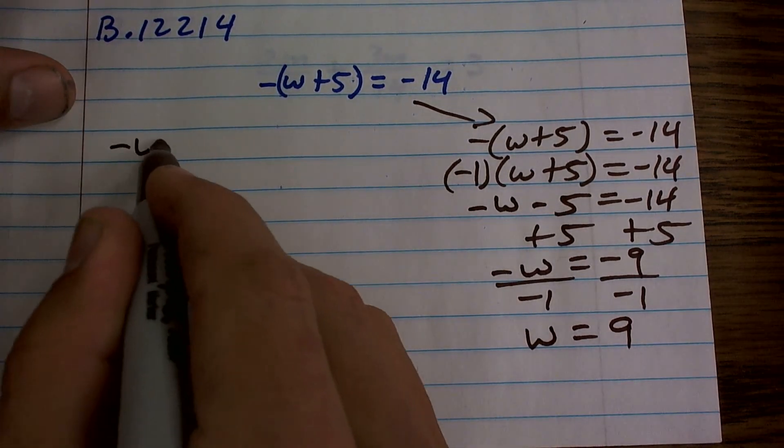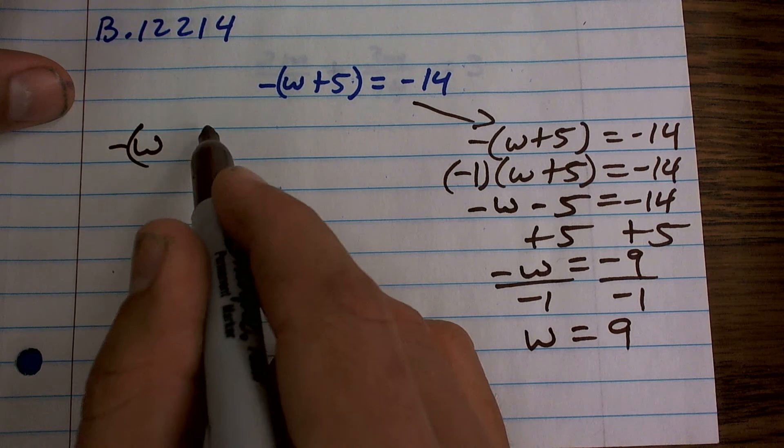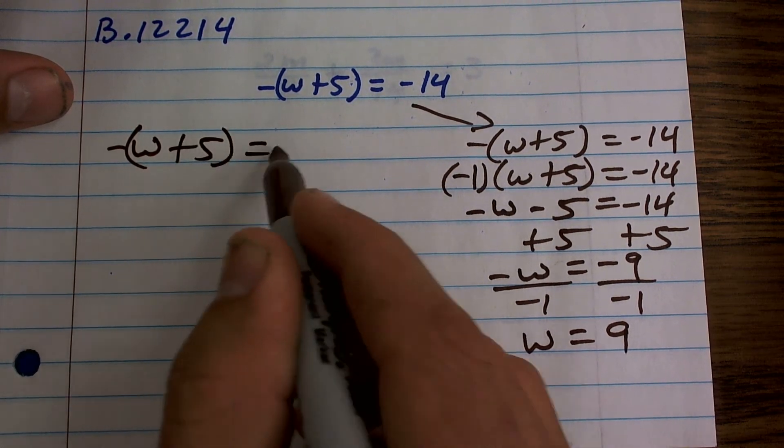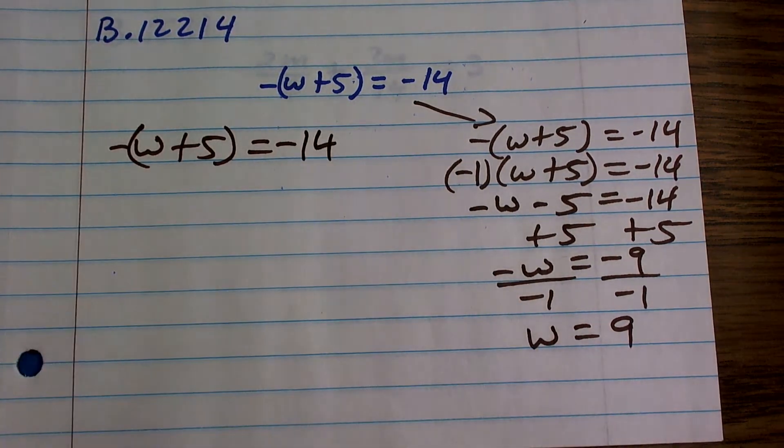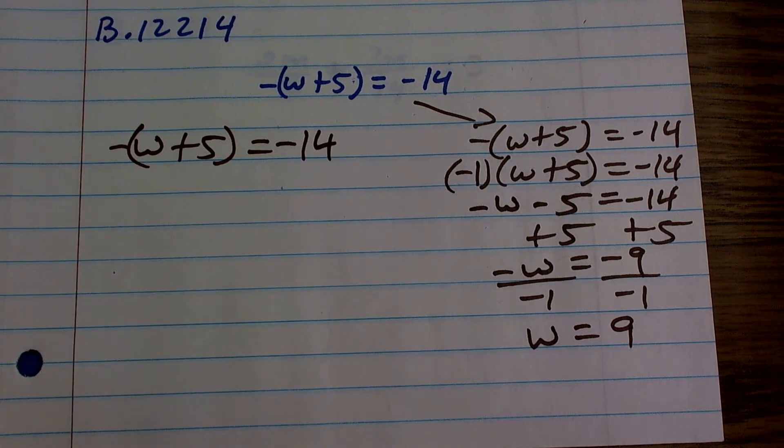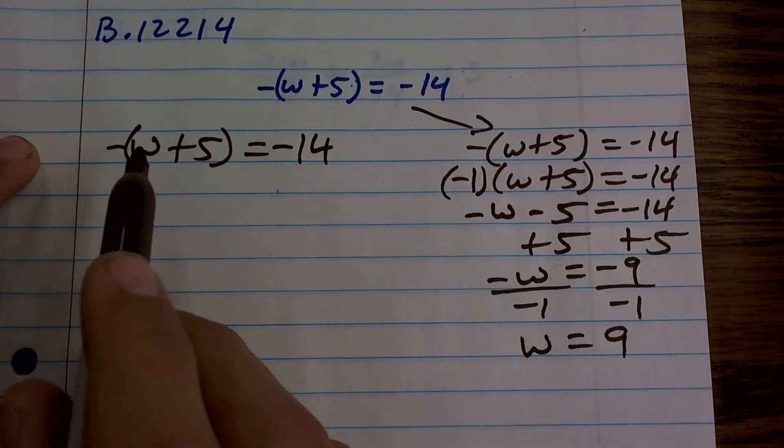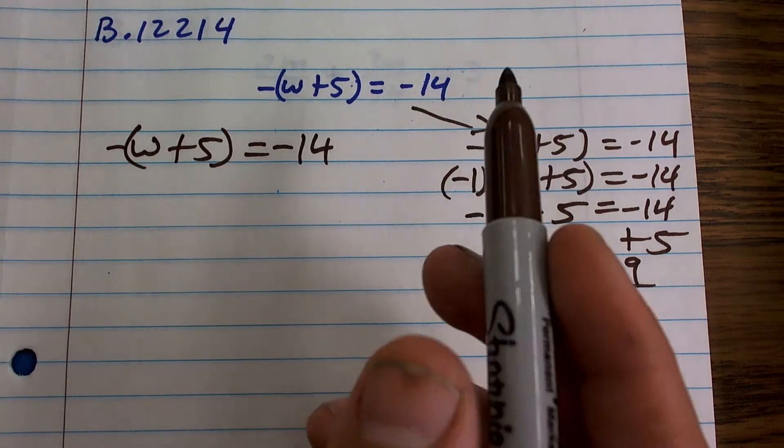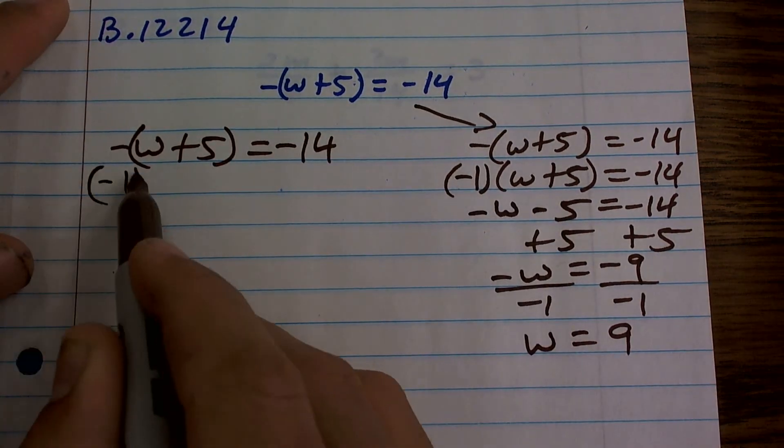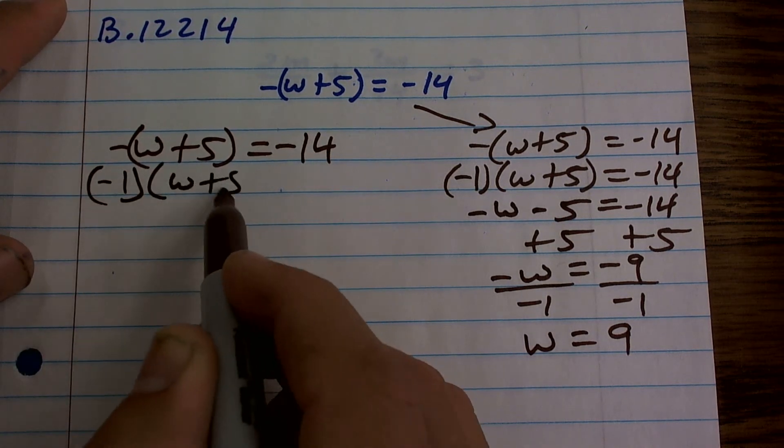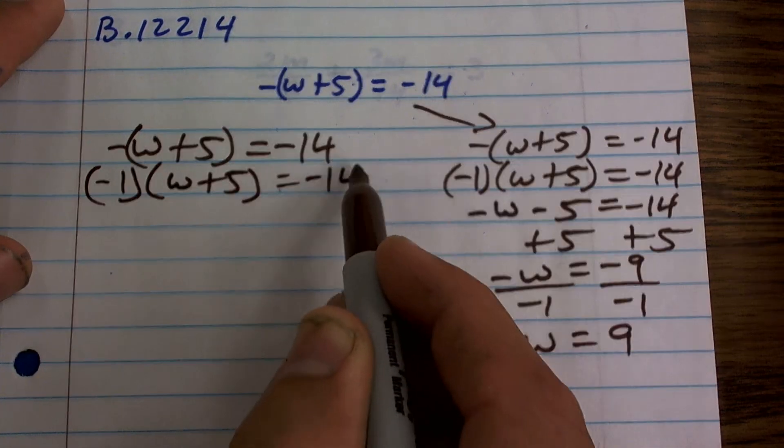Here's another way I just want you to understand and look at, because a lot of times we don't even need to use the distributive property. We can get away with undoing the distributive property. Remember, as long as I'm using the properties of equality, whatever I do on one side, I can do on the other side. So we take a look at this. Remember, our goal is to get our w by itself. So I have negative 1 times w plus 5 equals a negative 14.